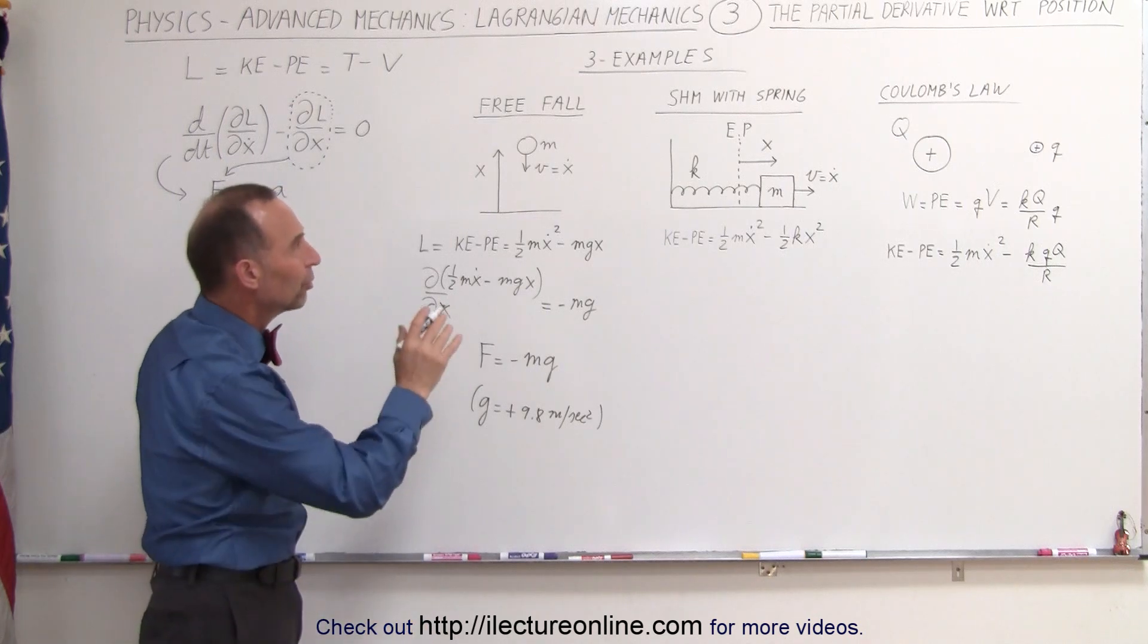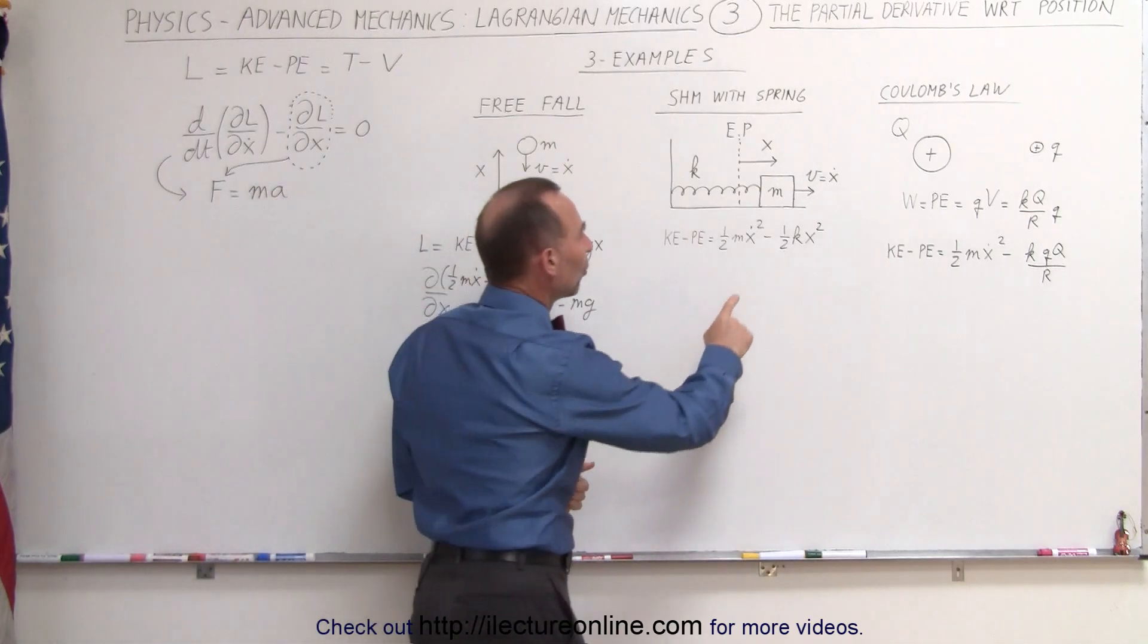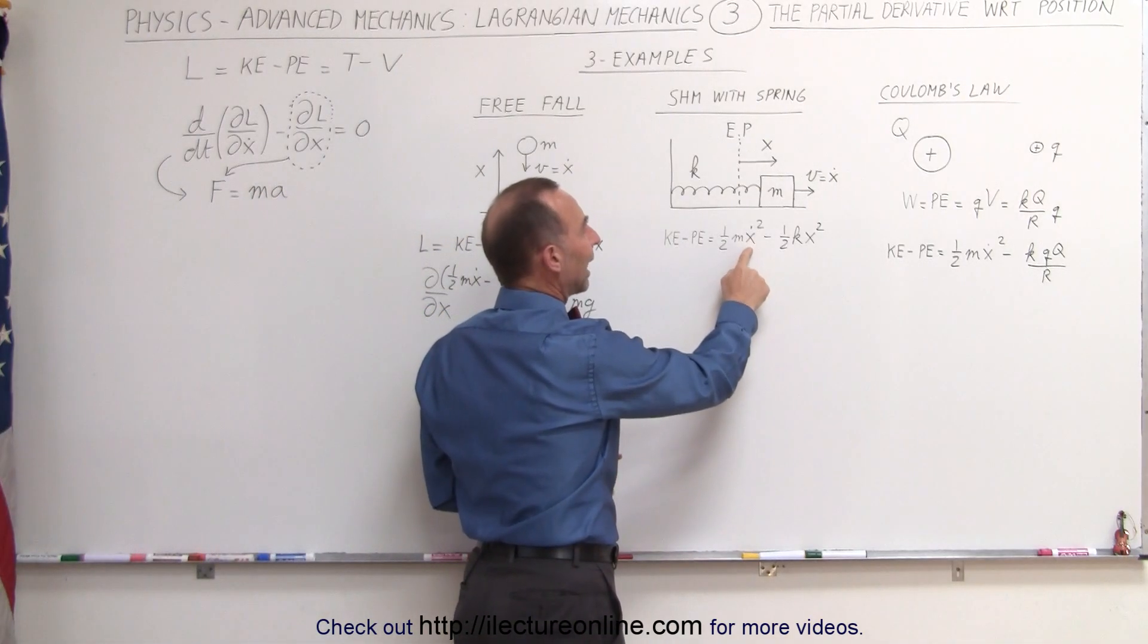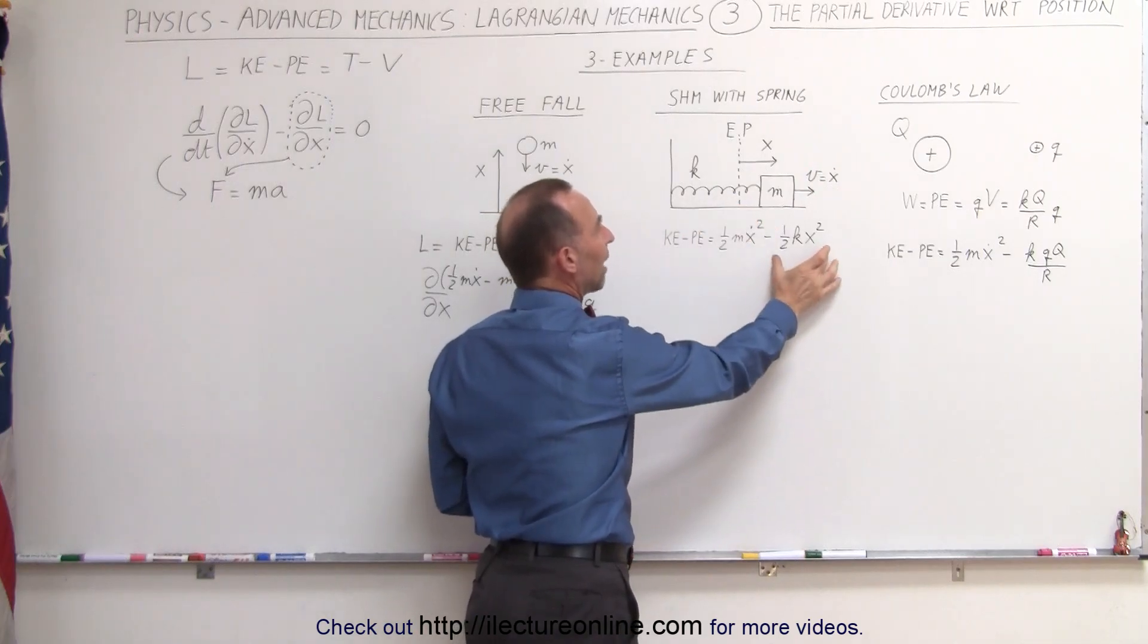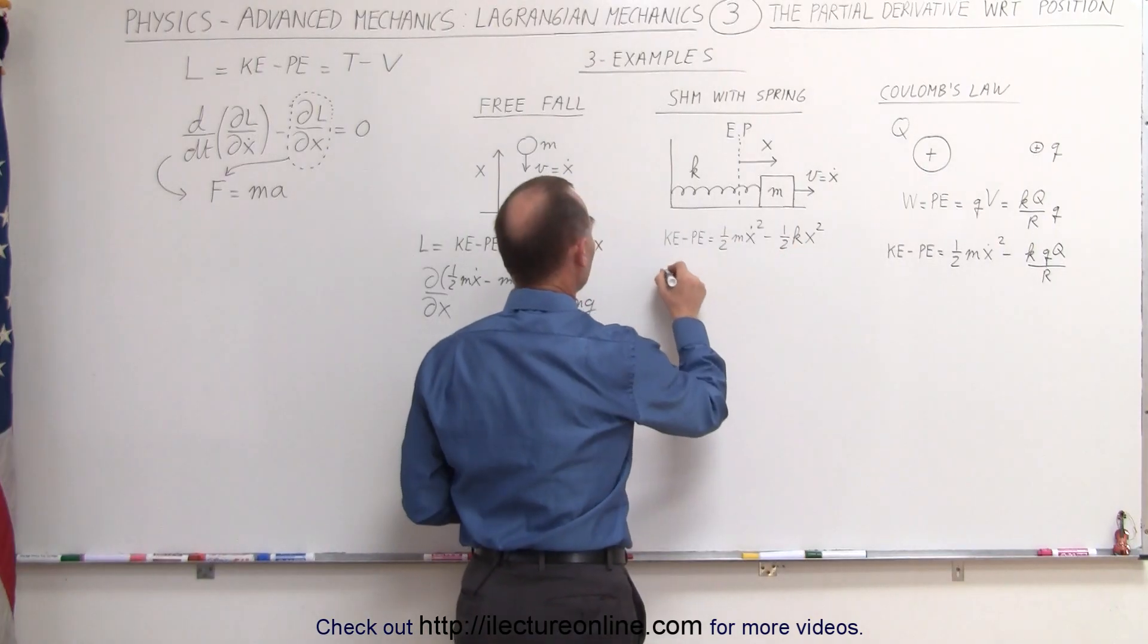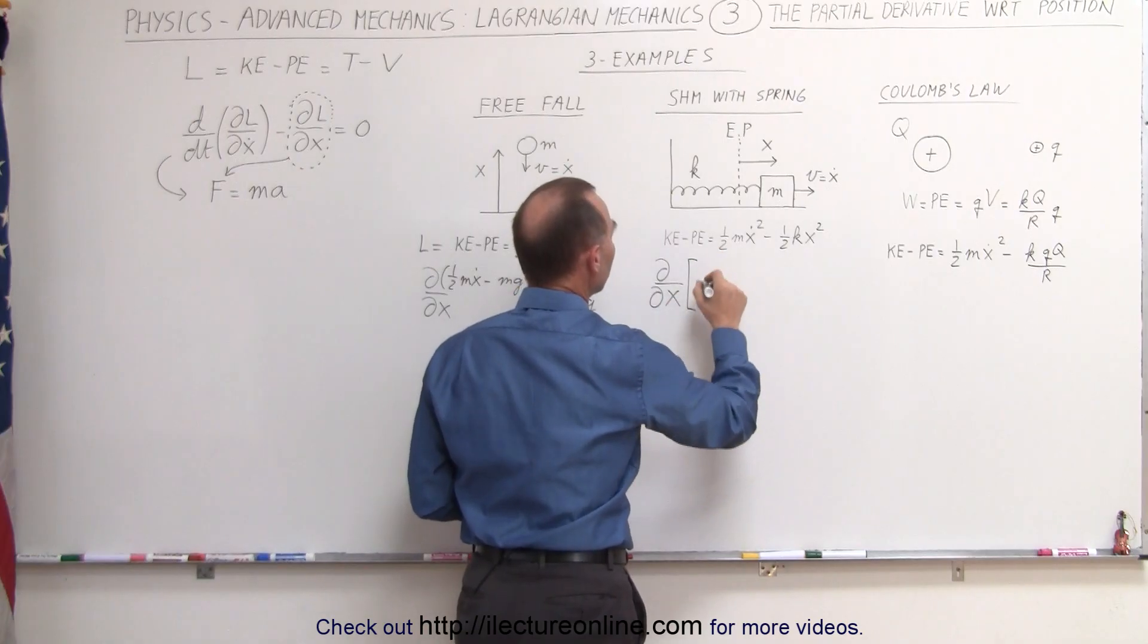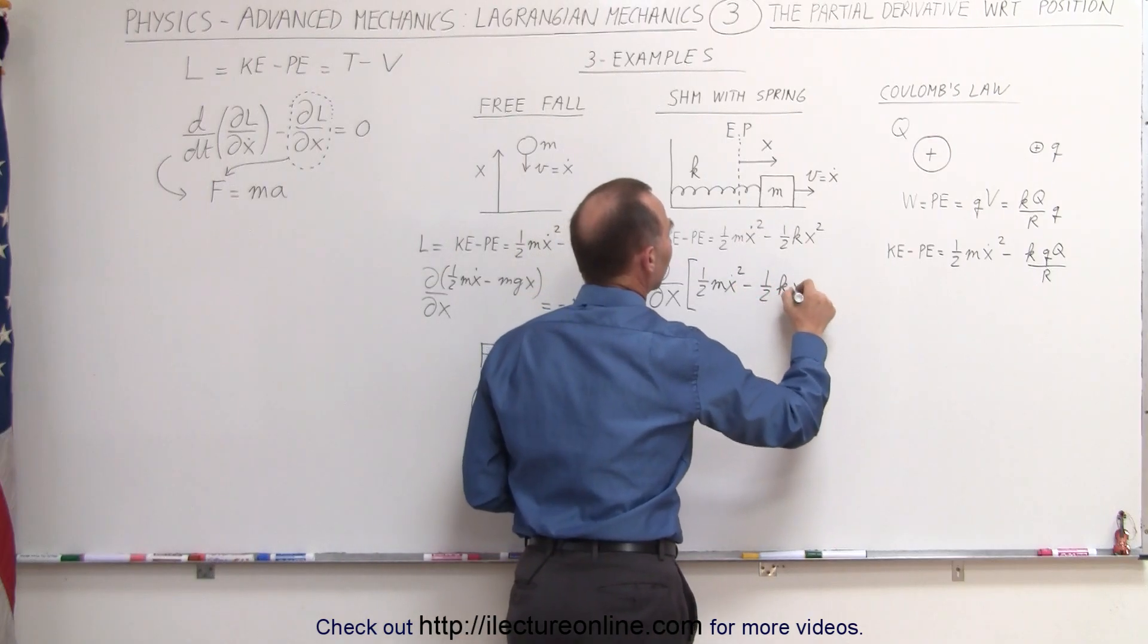Now let's go ahead and try to do that with simple harmonic motion with a spring. The kinetic energy is one-half mv squared, although in generalized coordinates, we write x dot instead of v. And the potential energy is stored in the spring as being one-half kx squared. So what we're going to do here is take the partial derivative with respect to the position of this quantity,